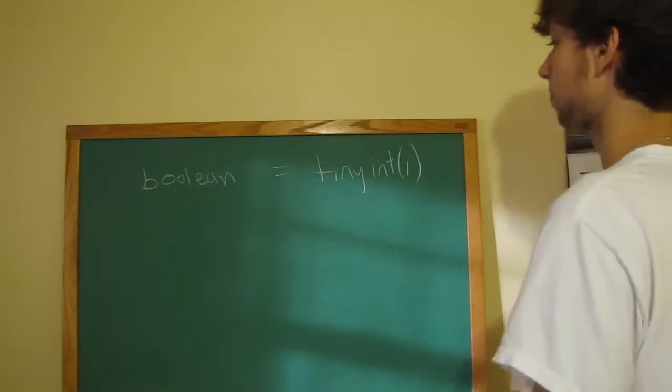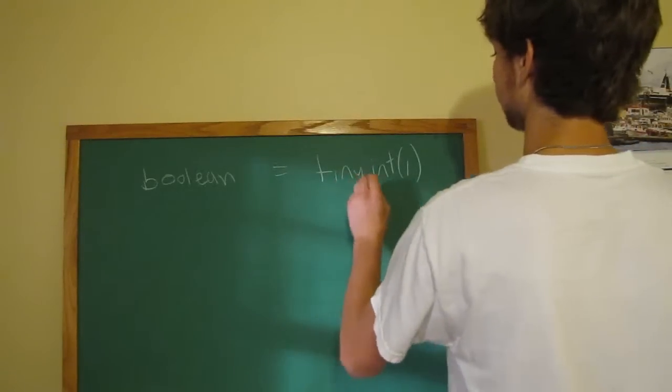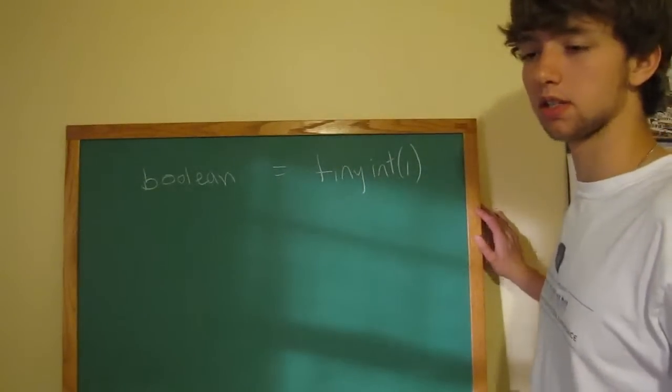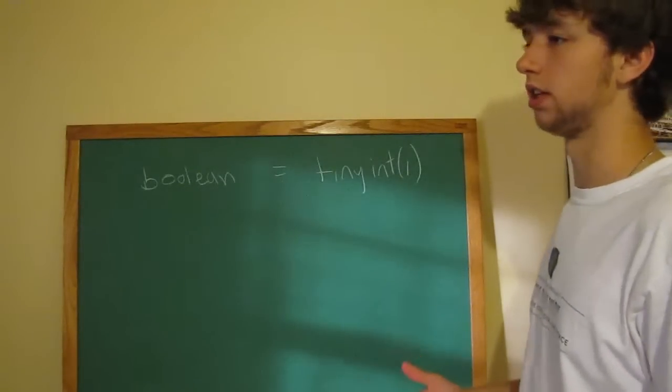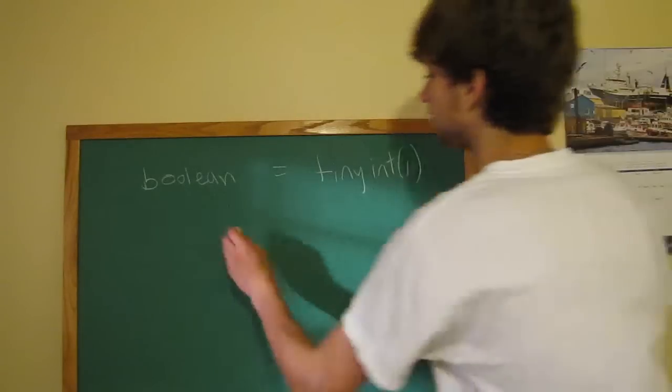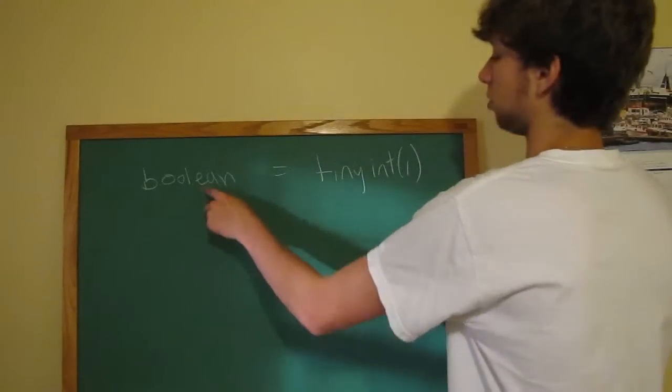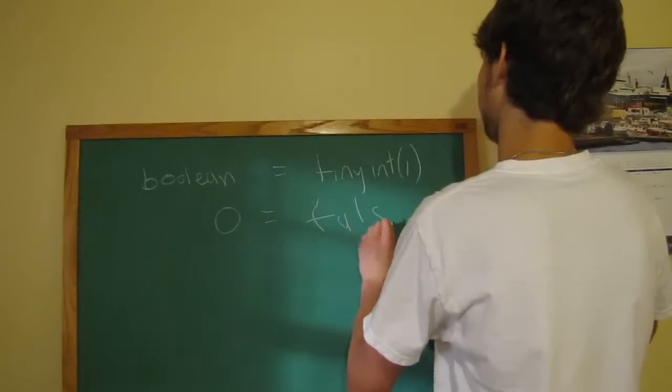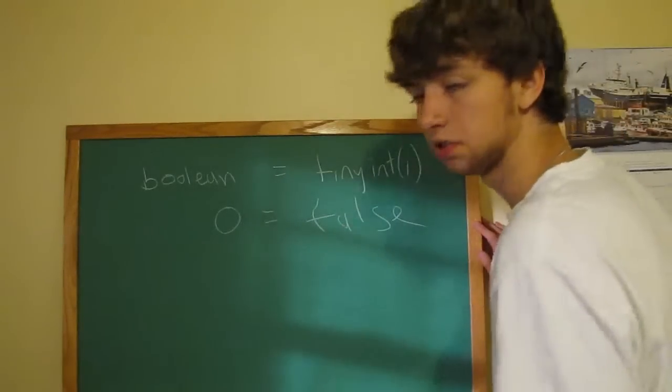Boolean is very simple. It's the same thing as a tiny int 1. If you don't know anything about boolean, it's basically true or false. That's all boolean is. So a 0 entered into a boolean is equal to false, and then a 1 will be true.